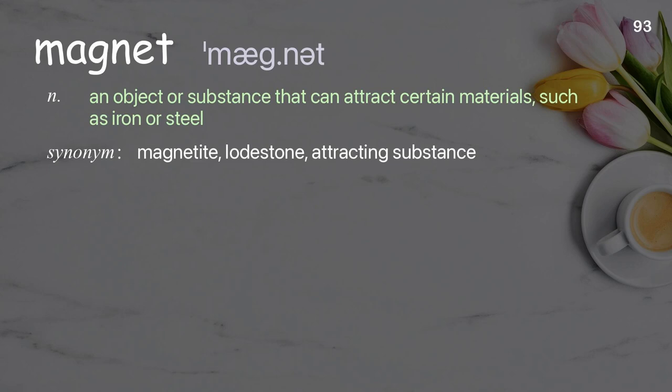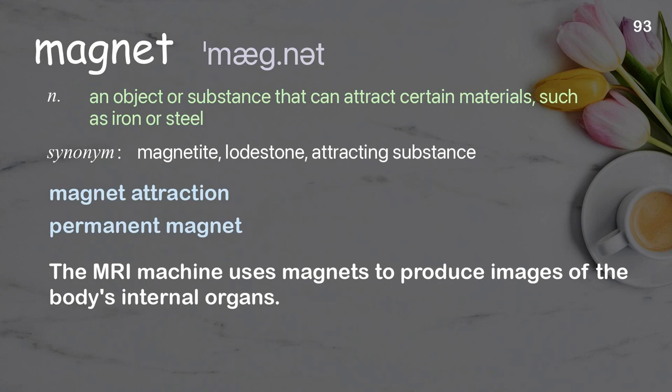Magnet. An object or substance that can attract certain materials such as iron or steel. Examples: magnet attraction, permanent magnet. The MRI machine uses magnets to produce images of the body's internal organs.